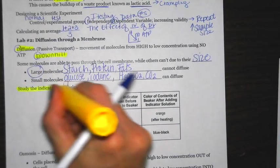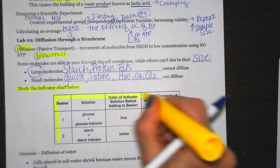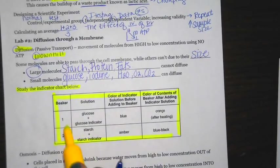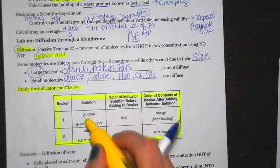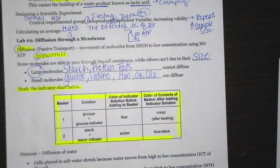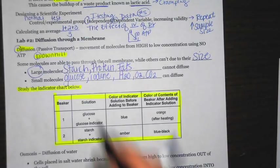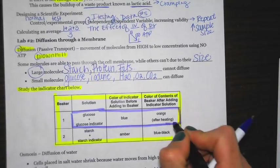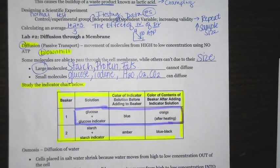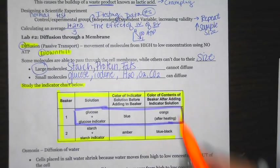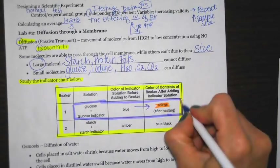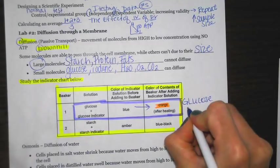One thing people typically struggle with are the indicators. We use them on several labs, but even so it's pretty challenging. The two indicators are: glucose indicator and iodine. The glucose indicator starts as a light blue color. When you heat it up, it turns orange — so it goes from blue to orange. That means glucose is present.